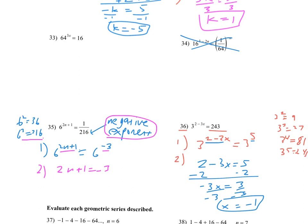Alright, and then we will subtract 1, 2n equals negative 4, and then divide by 2, and n equals negative 2.